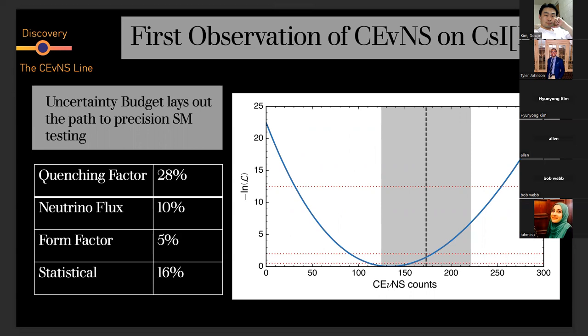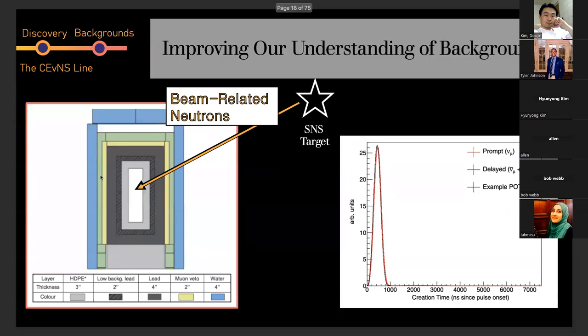The results uncertainty budget actually lays out a really good roadmap for how to get towards precision, looking at what are the greatest sources of uncertainty so we can start addressing them in a more systematic way. Some of the predominant sources of uncertainty for this first discovery measurement were the quenching factor, more on that later, the neutrino flux, the form factor, and statistics, all of which will be addressed later in this talk to varying degrees. Let's move along on this journey towards precision experiments, plural.